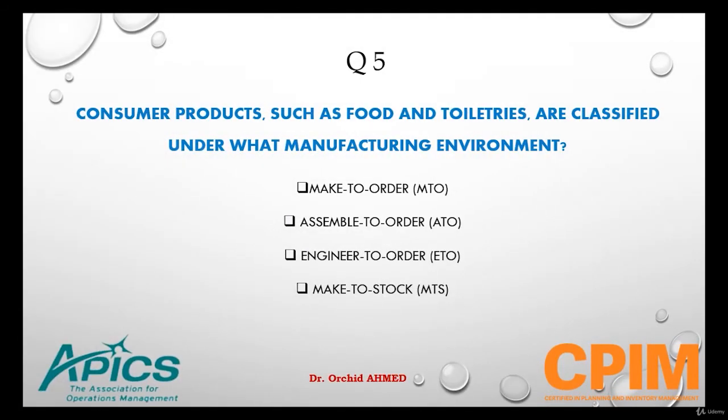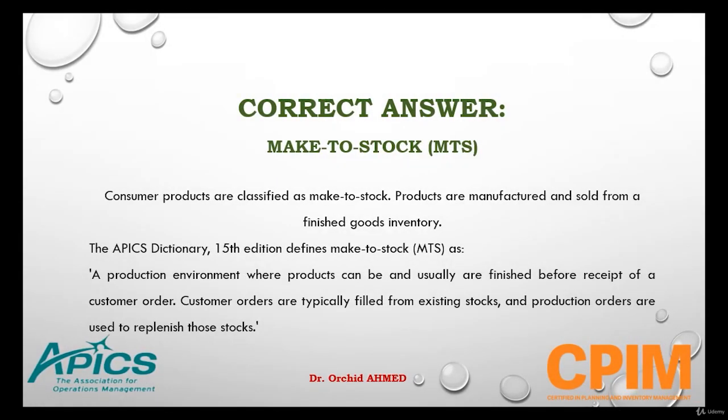Question number five: Consumer products such as food and toiletries are classified under what manufacturing environment? Options are: make to order, assemble to order, engineer to order, or make to stock. Consumer products will be under make to stock.